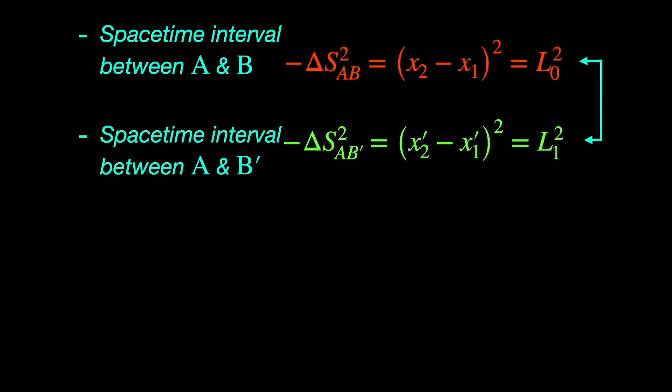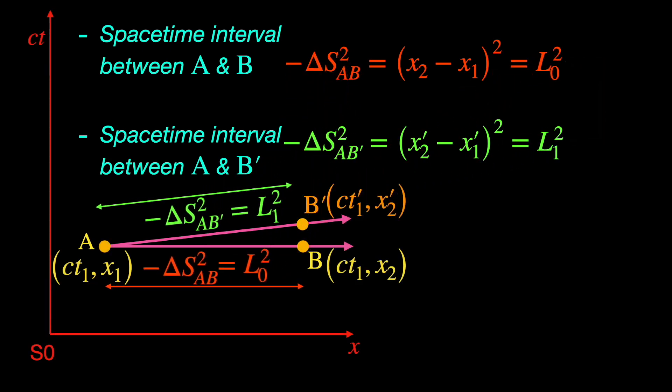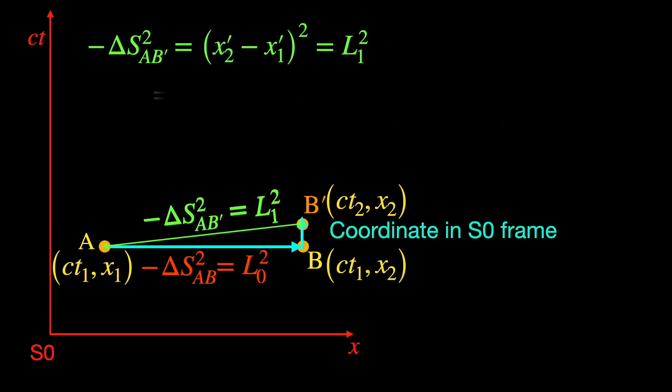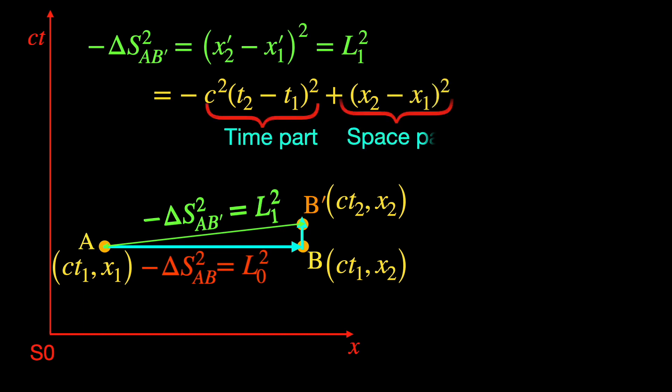Now how to connect the two length measurements? We need to express the ΔS²ₐᵦ' using our S0 frame coordinates, that will help us relate L₀ and L₁. You can see that ΔS²ₐᵦ' which is a purely spatial length in S1 frame appears to be made of a spatial part and a temporal part according to our S0 frame coordinate system. From the diagram the space part is clearly (x₂-x₁)² or in other words L₀² itself. To write the time part we need the time coordinate of B' in S0 frame. If it is sum ct₂, ΔS²ₐᵦ' will be c²(t₂-t₁)² plus (x₂-x₁)², a sum of time part and space part in terms of S0 frame coordinates. In fact we can express the time part in terms of space part, that is L₀² using simple trigonometry.